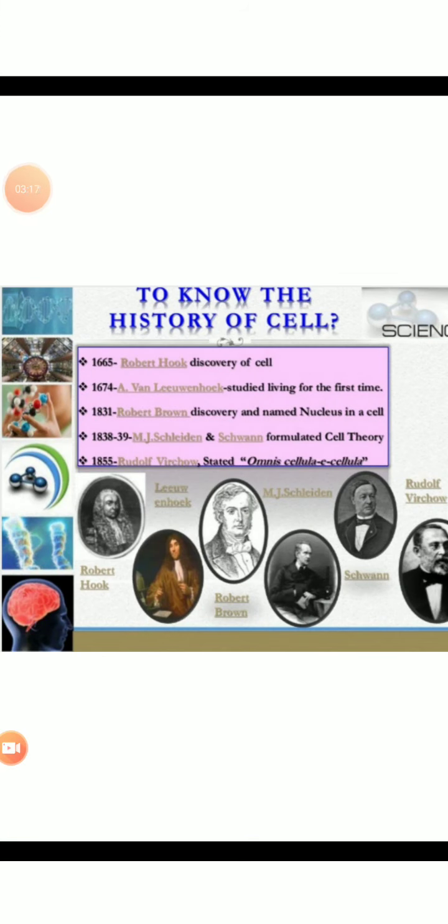There is a need to know about the history of cell. Robert Hooke in 1665 discovered the cell. A. Von Leeuwenhoek in 1674 studied the living cell for the first time. Robert Brown in 1831 discovered the structure called nucleus inside the cell. Schleiden and Schwann in 1838 and 1839 stated the cell theory. Whereas Rudolf Virchow in 1855 stated omnis cellula e cellula, which means that cells arise from pre-existing cells.